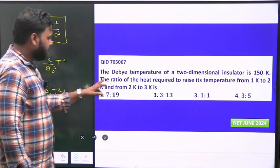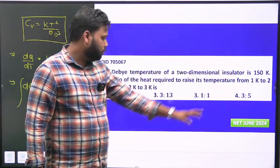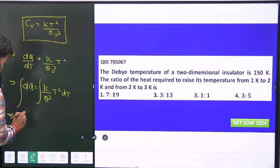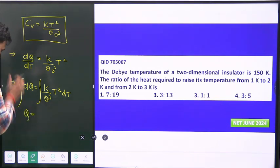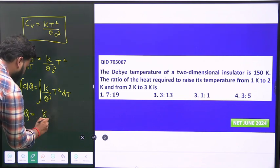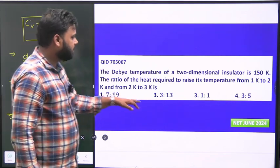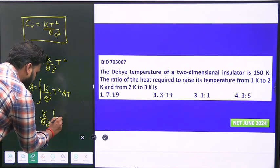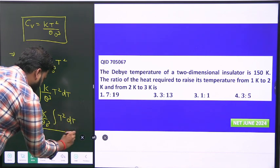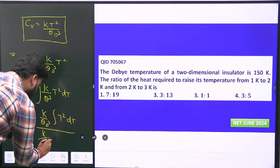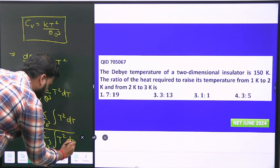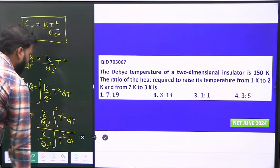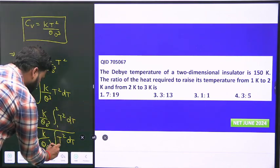We need the ratio of heat required to raise temperature from 1K to 2K and from 2K to 3K. Integration of dQ gives heat Q. The ratio will be: K over theta_D cubed integral T squared dT from 1 to 2, divided by K over theta_D cubed integral T squared dT from 2 to 3.